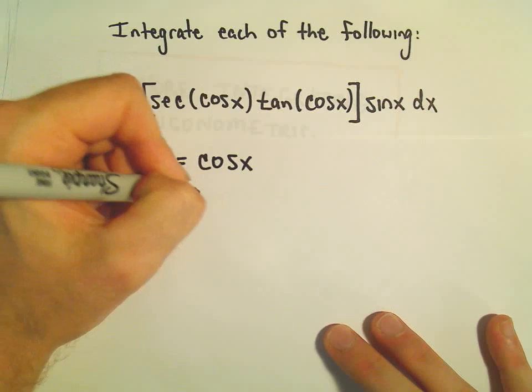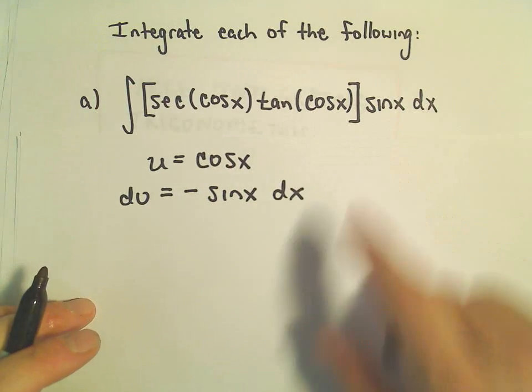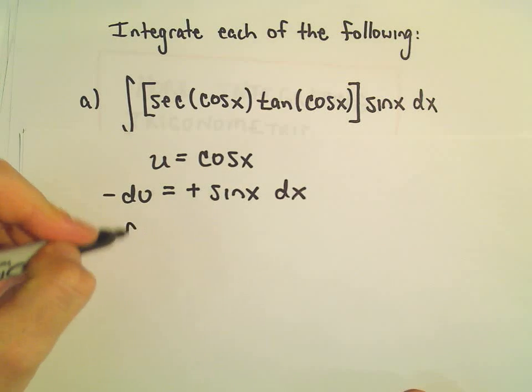du would be negative sine x dx, and to get a positive sine x, we can just multiply both sides by negative 1, and now we can just fill everything in.